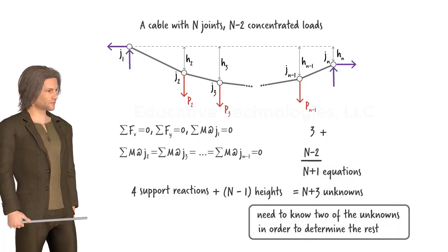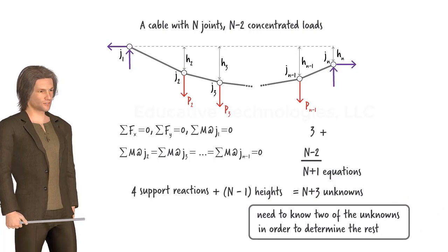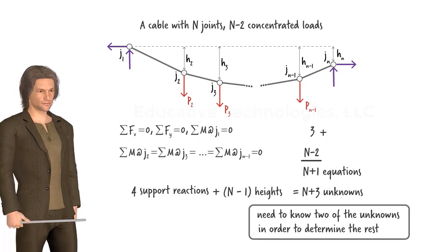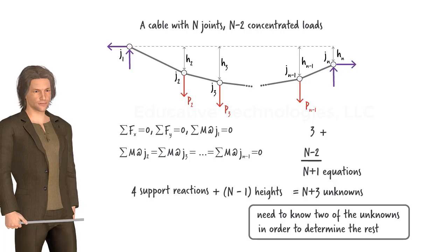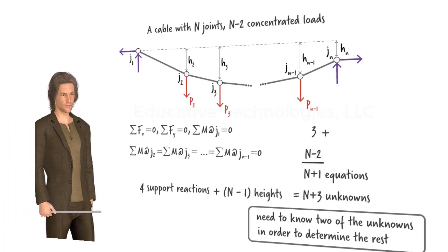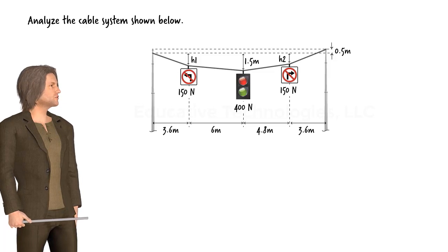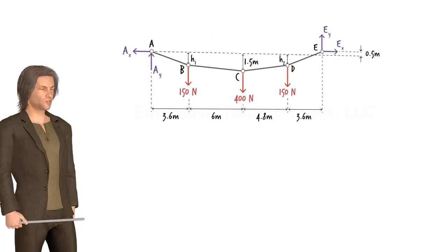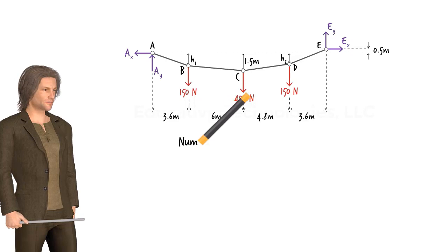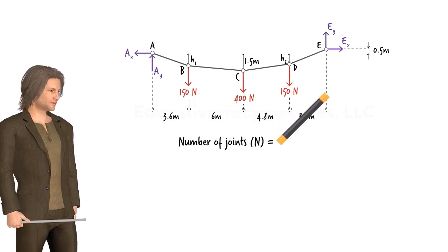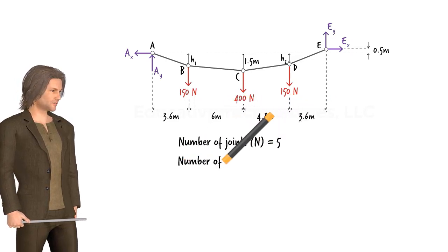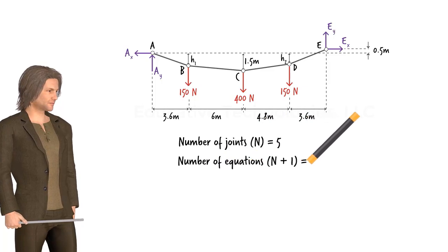Once all these unknowns are determined, we can use an equilibrium equation at each interior joint to calculate the tension forces in the cable. Let's use this process to solve the two exercise problems from the previous lecture. For the first problem, we wish to analyze the cable system shown. Since N, the number of joints, equals 5, we can write N plus 1, or 6, equilibrium equations.